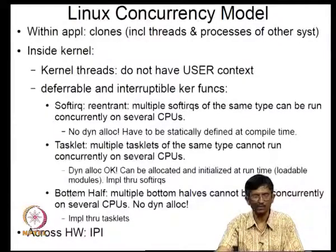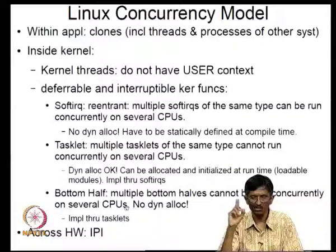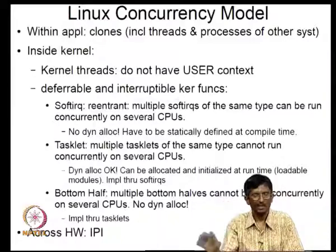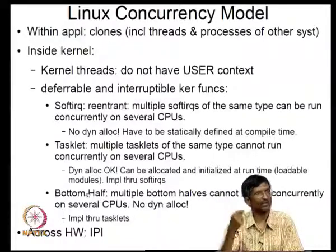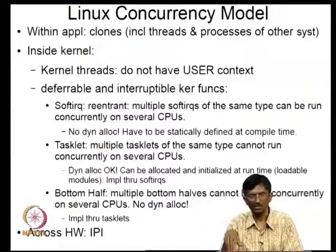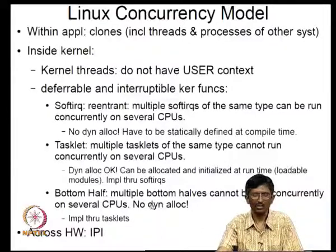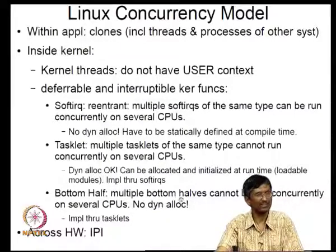The original Linux bottom half design had two problems: multiple bottom halves could not run concurrently on several CPUs, and the number of bottom halves was fixed — one per subsystem such as disk, networking, TTY. This was extremely restrictive with no dynamic allocation.